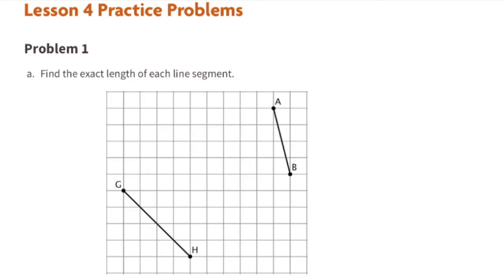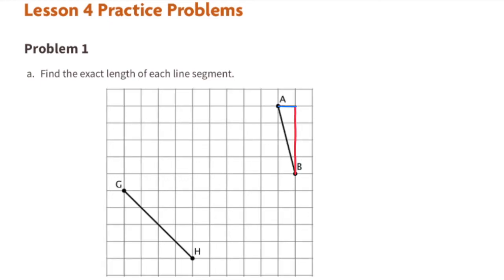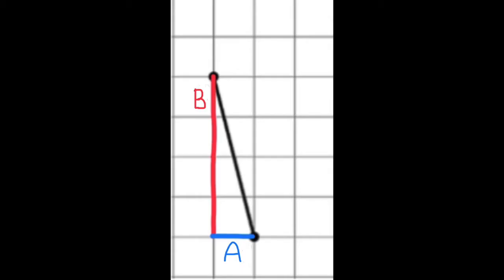Part a: find the exact length of each line segment. Starting with line segment AB, I turned it into a triangle to figure out the missing side length. The blue side is one unit (call it a) and the red side is four units (call it b). I rotated the triangle 180 degrees so it looks more familiar. Using a for the blue line, b for the red line, and c for the black line — remember: a squared plus b squared equals c squared.